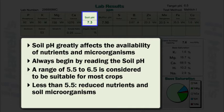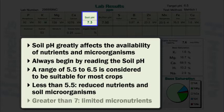Soil pH less than 5.5 is considered highly acidic and can reduce the availability of some plant nutrients and the populations of certain soil microorganisms such as bacteria and actinomycetes. A soil pH greater than 7 is alkaline and can negatively limit the availability of many important micronutrients such as iron and manganese.